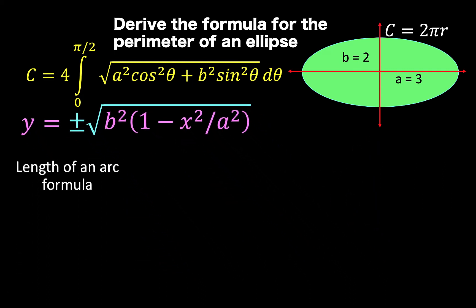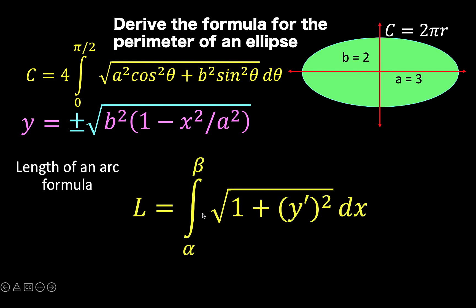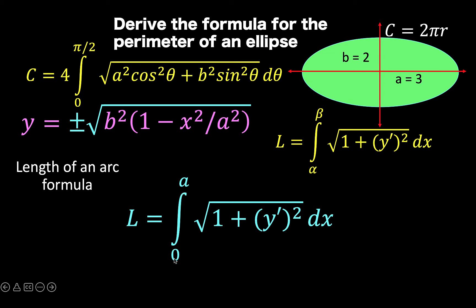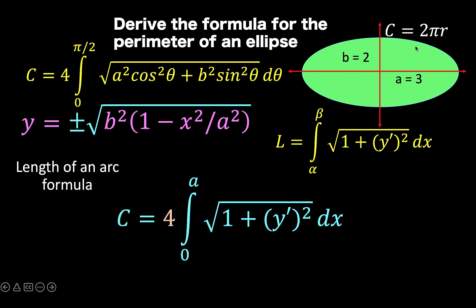Let's recall the formula for the length of an arc: l equals the definite integral from alpha to beta of the square root of 1 plus the derivative of y squared dx. We need to find y prime. If we integrate from x equals 0 up to a, we find the arc length only at the first quadrant, so to find the full perimeter of the ellipse, we need to multiply this formula by 4.